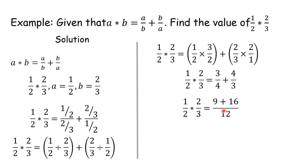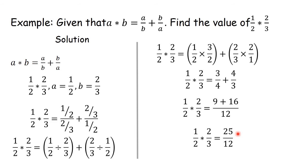We now add 3/4 plus 4/3. The LCM of 4 and 3 is 12. So 12 divided by 4 is 3, times 3 gives 9. Then 12 divided by 3 is 4, times 4 gives 16. And 16 plus 9 gives us 25. Therefore, (1/2)★(2/3) is equal to 25 over 12.